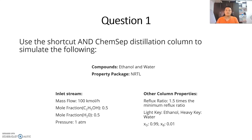Use the shortcut and ChemSep distillation column to simulate the following in DWSIM. The compounds are ethanol and water, and the property package to be used is NRTL. The inlet stream has a molar flow of 100 kmol per hour, mole fraction of 0.5 ethanol and 0.5 water, with a pressure of 1 atm. The reflux ratio is 1.5 times the minimum reflux ratio. The light key is ethanol, the heavy key is water, the fraction of ethanol in the distillate is 0.99, and the fraction of ethanol in the bottoms is 0.01.